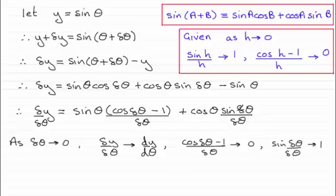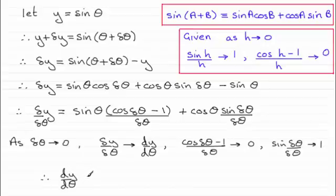Substituting these results in: the first term tends to zero, and sine theta multiplied by zero is zero. The second result is 1, so cosine theta times 1 is cosine theta. Therefore dy/dθ is equal to cosine theta — by differentiating sine theta with respect to theta the result is cosine theta.